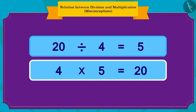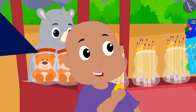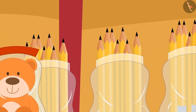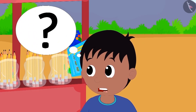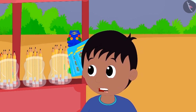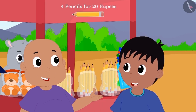Absolutely correct! This is the way in which we can write it in terms of multiplication: four pencils, and each pencil costs five rupees, so the total is 20 rupees. Bablu quickly handed five rupees to Gagu and bought the pencil. Raju was amazed at how fast Bablu had calculated the answer.